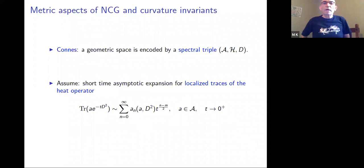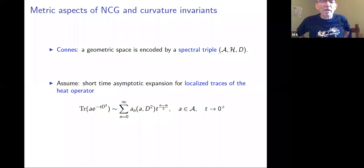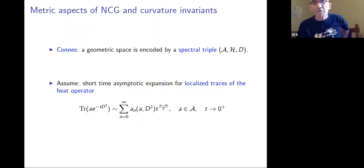Now we are in the 21st century, so let's talk about space in its new incarnations. We have Alain Connes's idea: a geometric space, a noncommutative space, is given by a spectral triple (A, H, D). I need to say nothing about this to this audience. So, spectral triples (A, H, D) — like M for a manifold.